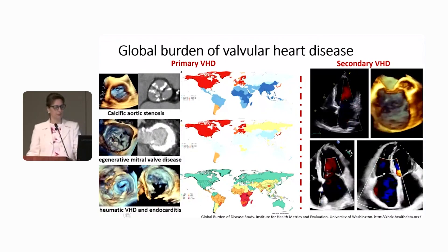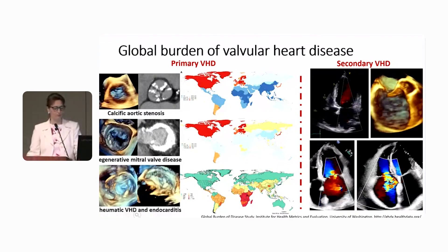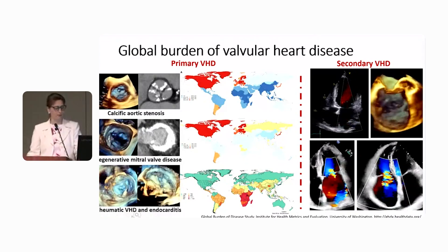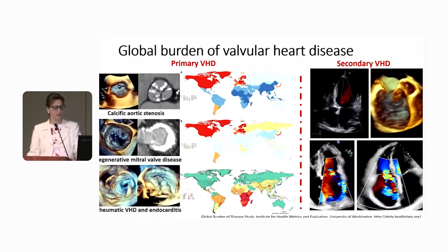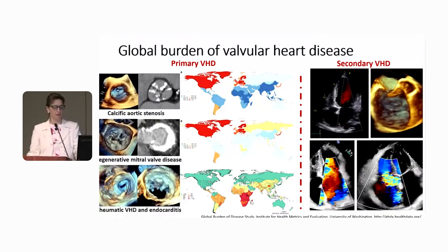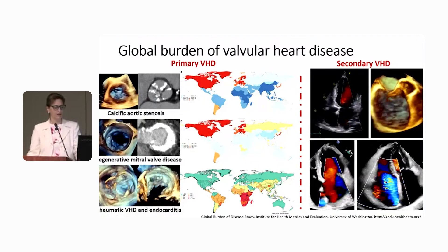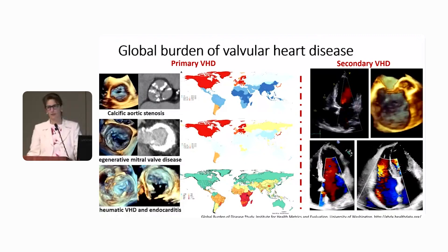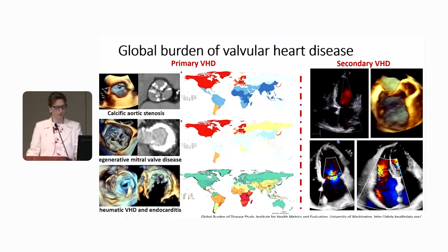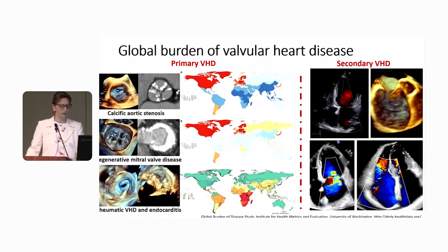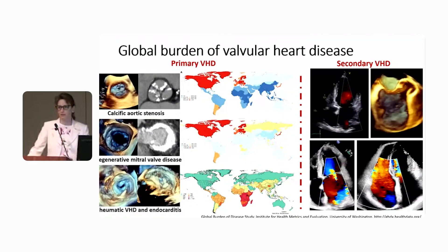Other types of primary valvular heart disease include rheumatic valvular heart disease, which is much more prevalent in the southern hemisphere, and endocarditis, which is much more rare and anecdotal, and for which we have several registries.